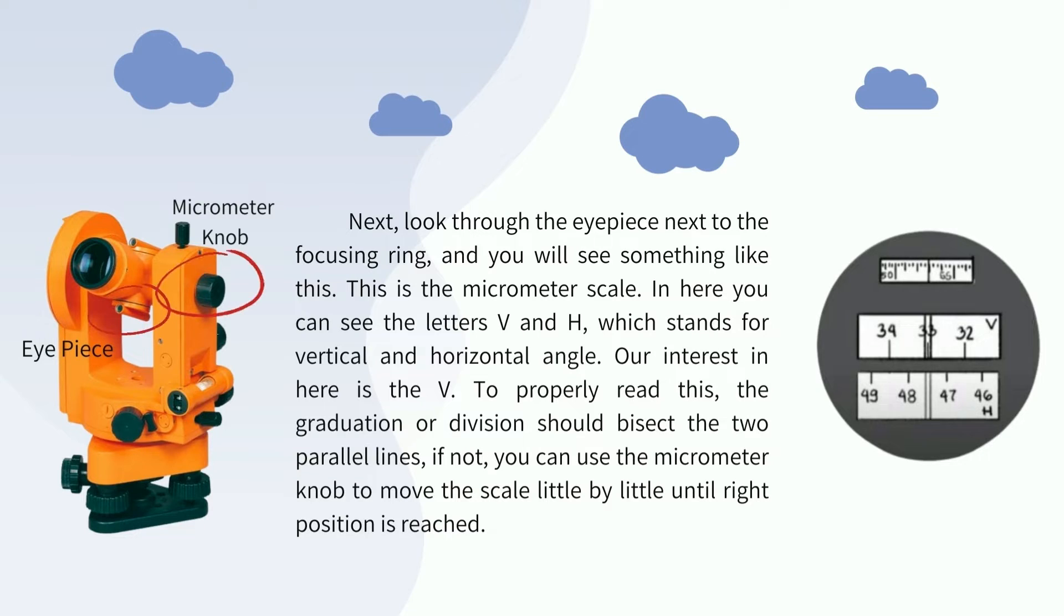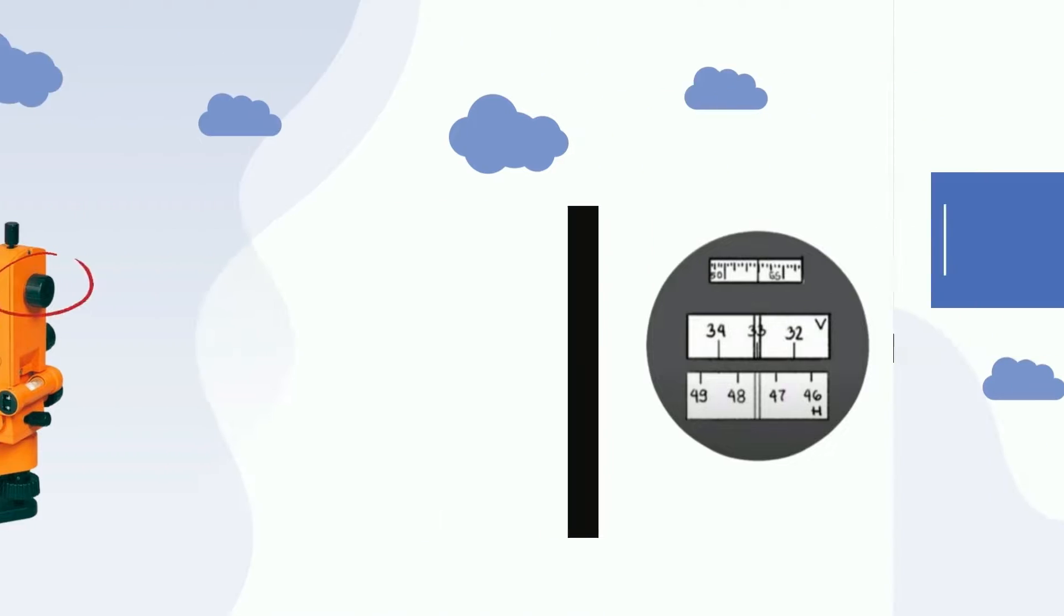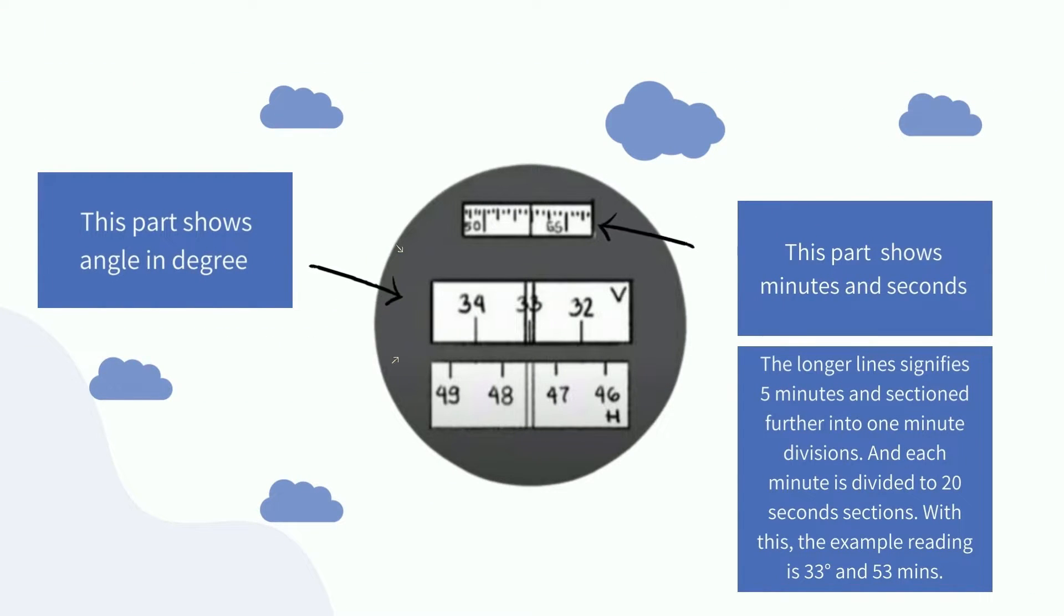Next, look through the eyepiece next to the focusing ring, and you will see something like this. This is the micrometer scale. In here, you can see the letters V and H, which stands for vertical and horizontal angle. Our interest here is the V. To properly read this, the graduation or division should bisect the two parallel lines. If not, you can use the micrometer knob to move the scale little by little until the right position is reached. This part shows angle and degree, while this part shows minutes and seconds. The longer line signifies 5 minutes and sections further into 1 minute divisions, and each minute is divided into 20 second sections. Like this, the example reading is 32 degrees and 53 minutes.